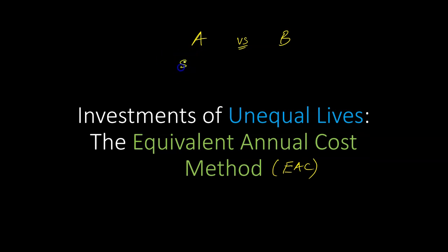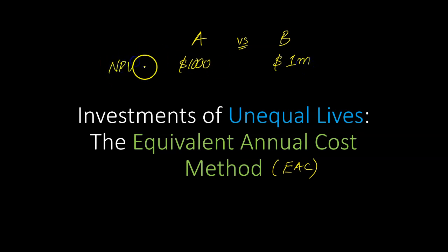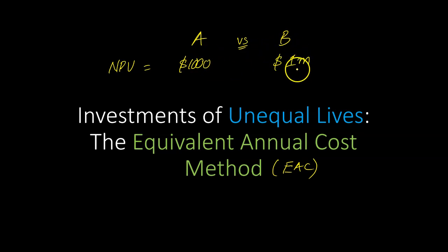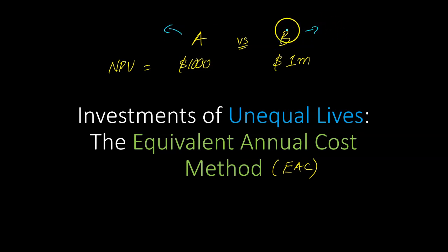For example, if project A has an NPV of $1,000 and project B has an NPV of $1,000,000, then the NPV rule says if you have to pick between the two of them, pick project B because it has a higher NPV. However, this argument assumes that both projects A and B have equal lives.